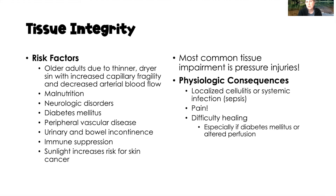We also see decreased arterial blood flow in adults as we age. Malnutrition also contributes, as do neurologic disorders and diabetes mellitus. Diabetes mellitus can result in tissue integrity issues, peripheral vascular damage, and urinary and bowel incontinence — those substances sitting on the skin can cause skin breakdown — as well as immune suppression.